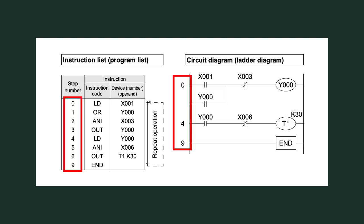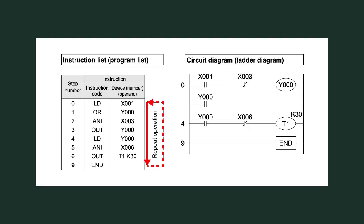The PLC's program capacity is fixed to a limited number of steps. The instructions are executed from step 0 to end, then it returns to step 0 and repeats continuously. This is called cyclic execution, and the time it takes to execute step 0 to end once is called the scan time.